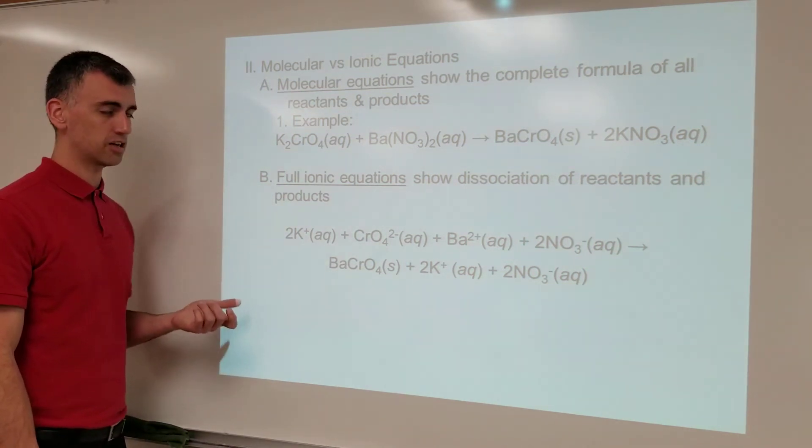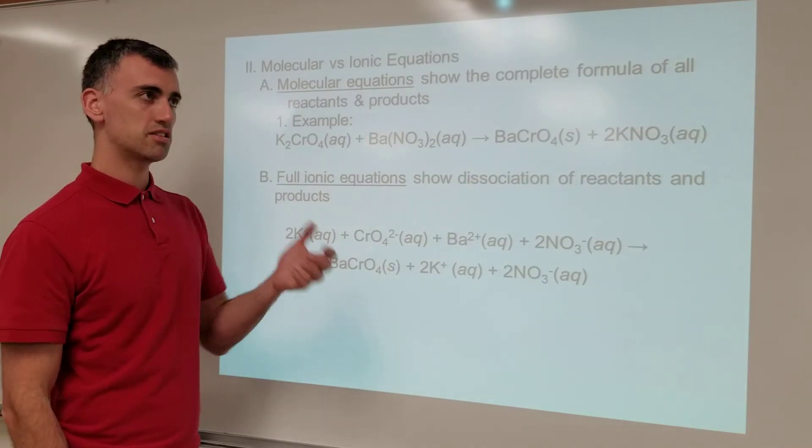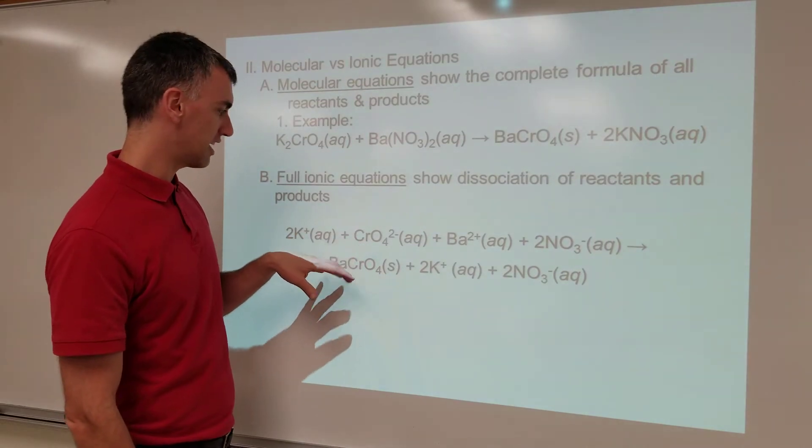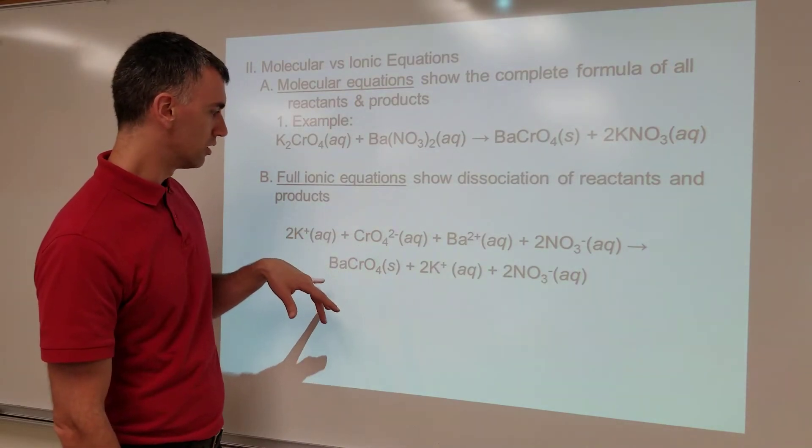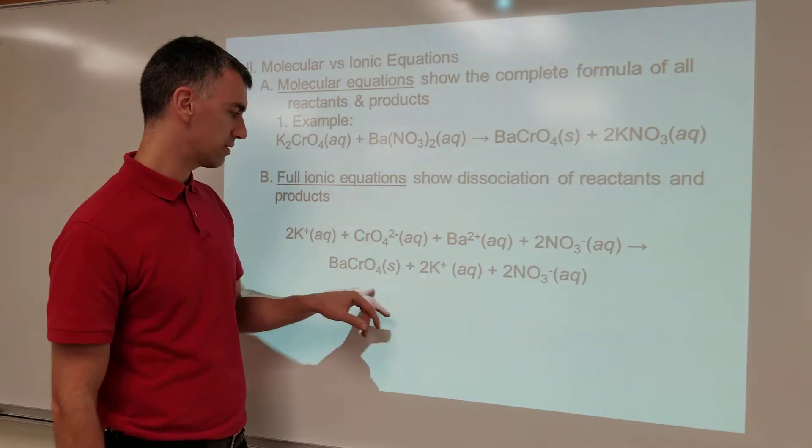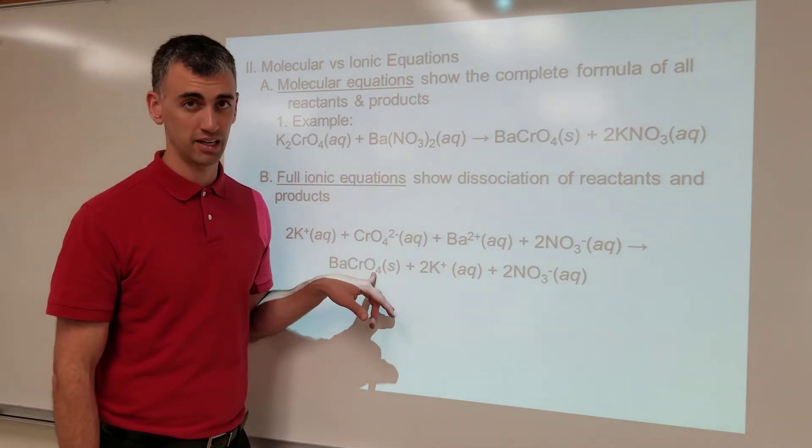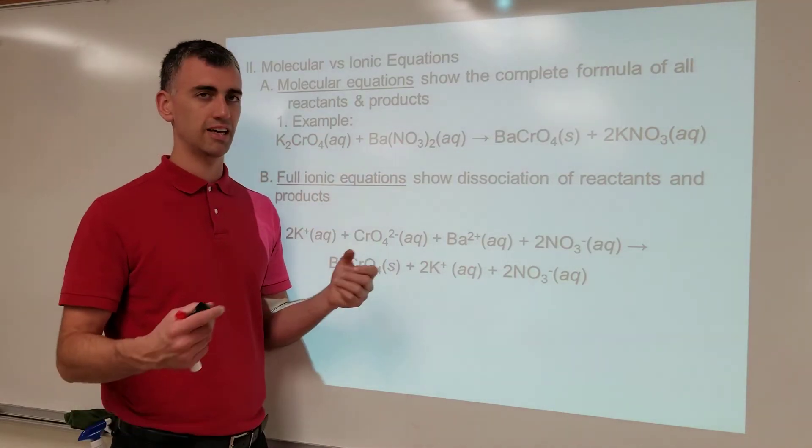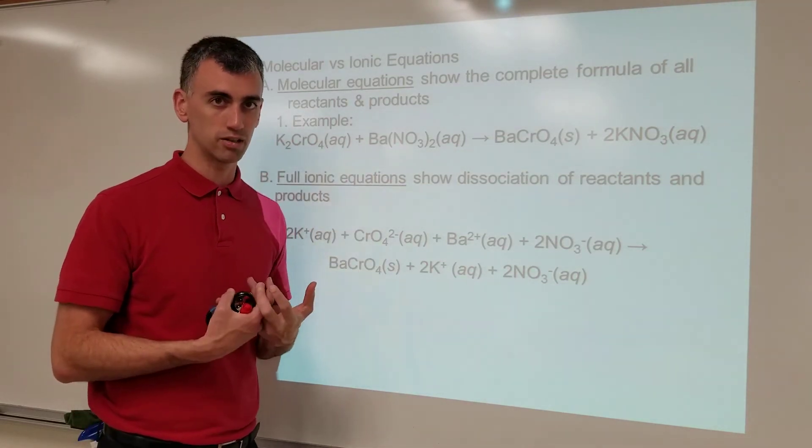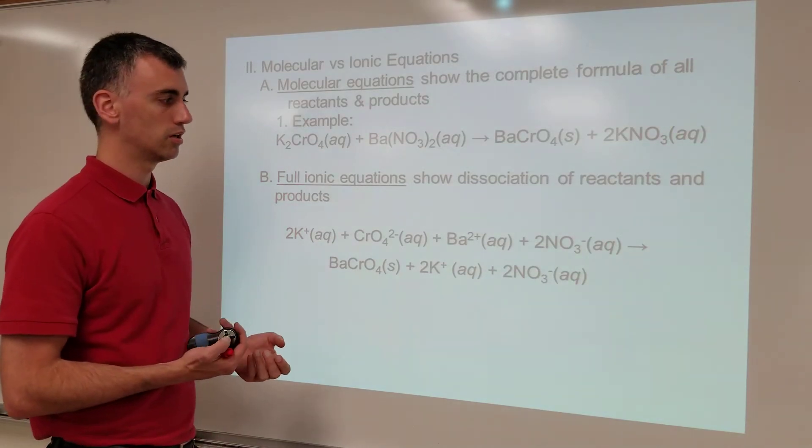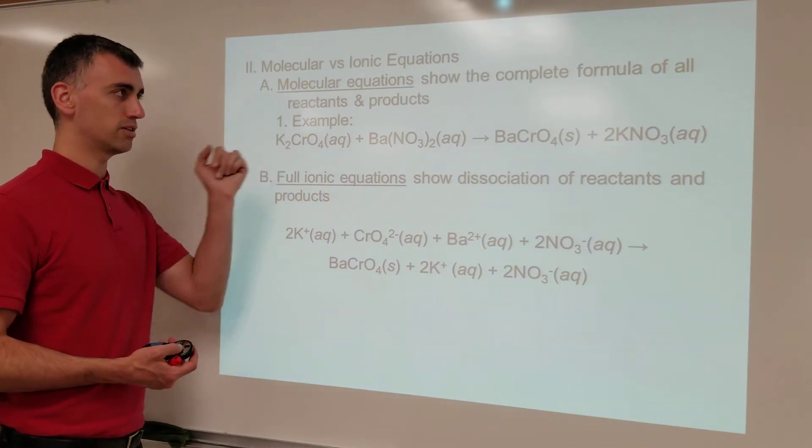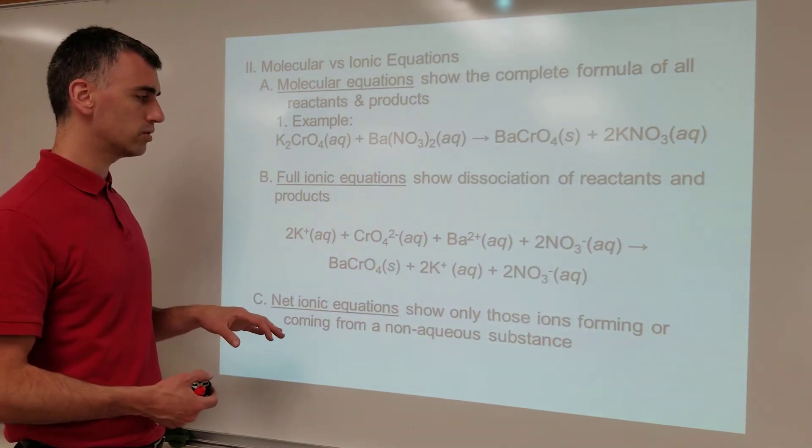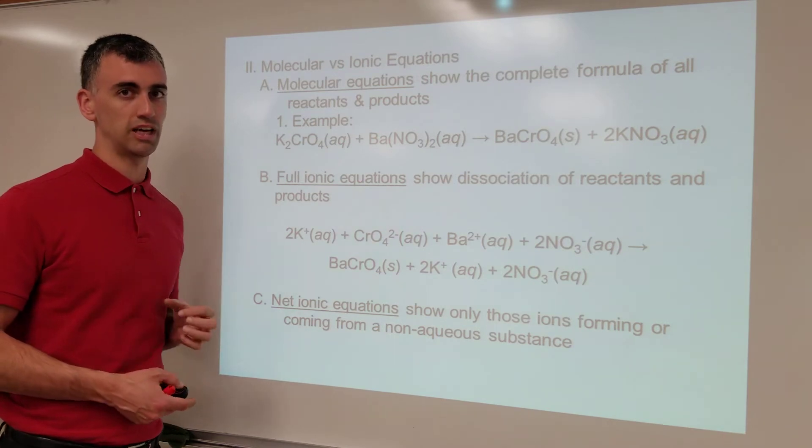A full ionic equation shows everything that's there, but we don't really necessarily want to pay attention to everything going on, because the real reaction that's happening - what's the only thing that changes? Well, we started with all aqueous stuff and end with something that's not aqueous. So we formed a precipitate. That's the thing of interest. When you put clear-colored solution and clear-colored solution together and get something colored and obviously not clear anymore, that's the reaction to pay attention to. In this case, we call it a double-displacement reaction that successfully happens. So we oftentimes will look at the net ionic equation where we just focus on the reaction that we care about.